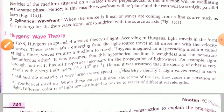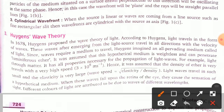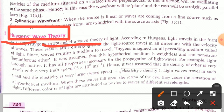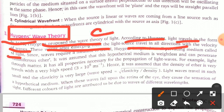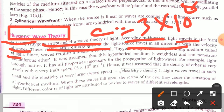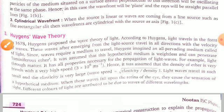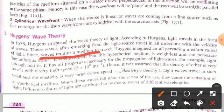Now we will discuss the most important topic: Huygens' wave theory. In 1678, Huygens proposed the wave theory of light. According to Huygens, light travels in the form of waves. These waves emerge from the light source and travel in all directions with the velocity of light, which is c = 3 × 10⁸ meters per second. Since waves require a material medium to travel, Huygens imagined an all-pervading medium called the luminiferous ether.